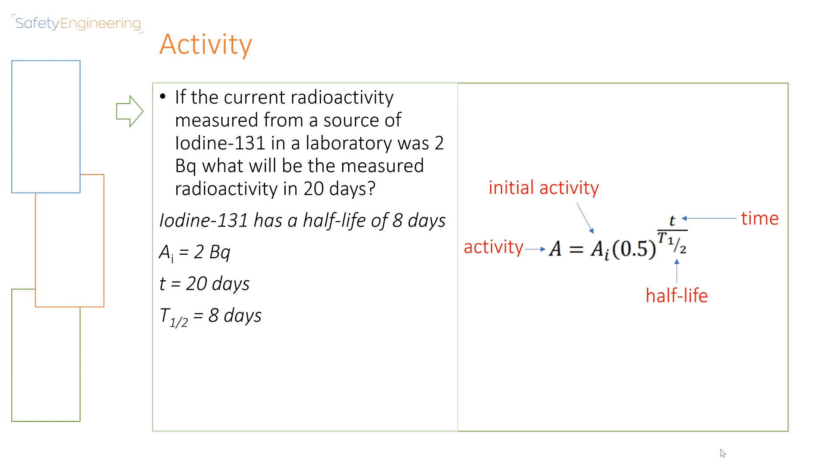If the current radioactivity measured from a source of iodine-131 in a laboratory is 2 Becquerel, what will be the measured radioactivity in 20 days? Now given that iodine-131 has a half-life of 8 days, and the initial activity is 2 Becquerel, and the time is 20 days, and the half-life is 8 days, all we now have to do is input these values into the equation, and we are going to get an answer of 0.35 Becquerel.